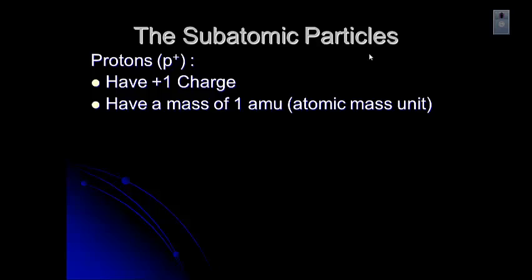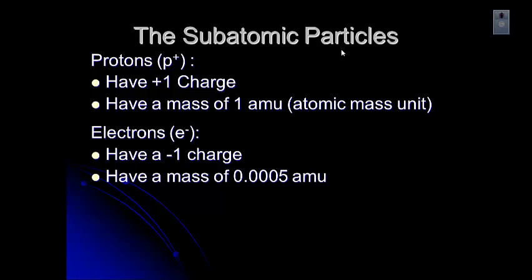An amu is an atomic mass unit, a chemistry unit that was made up to describe the mass of a proton. An electron is abbreviated with an e-minus because it has a negative one charge, and it has a mass of about .0005 amu.